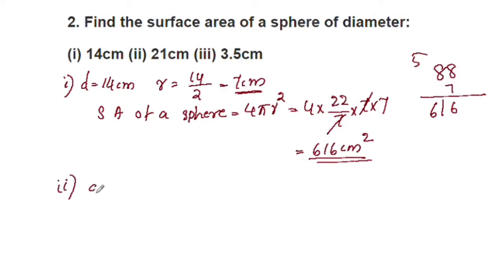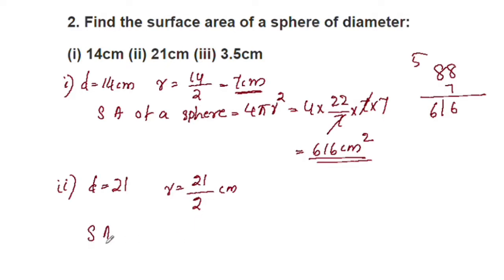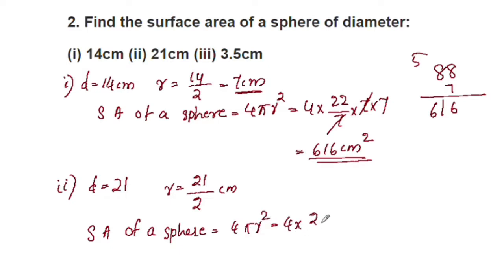Next part: d is equal to 21. So r is equal to 21 by 2 centimeter. Surface area of a sphere is equal to 4 pi r squared: 4 into 22 by 7 into r, where r is 21 by 2, into 21 by 2.